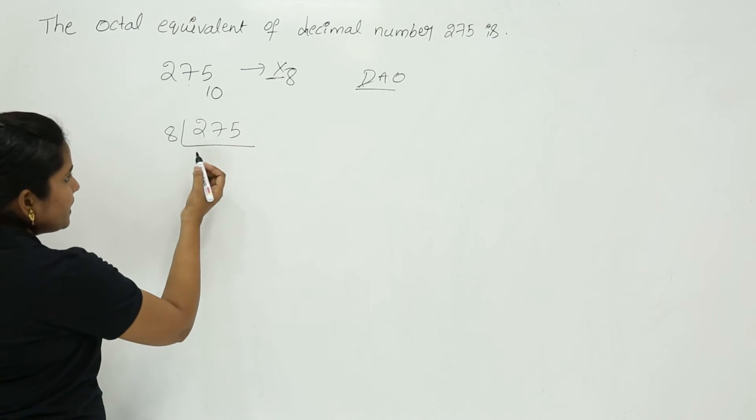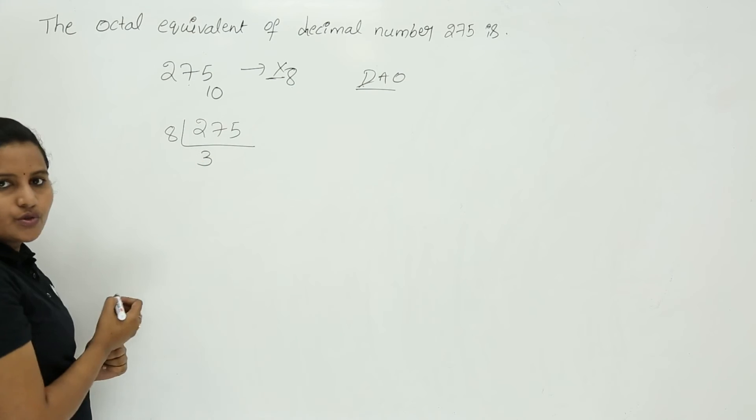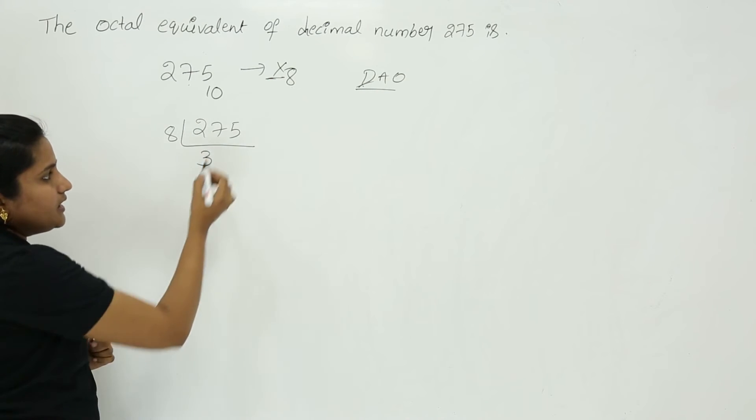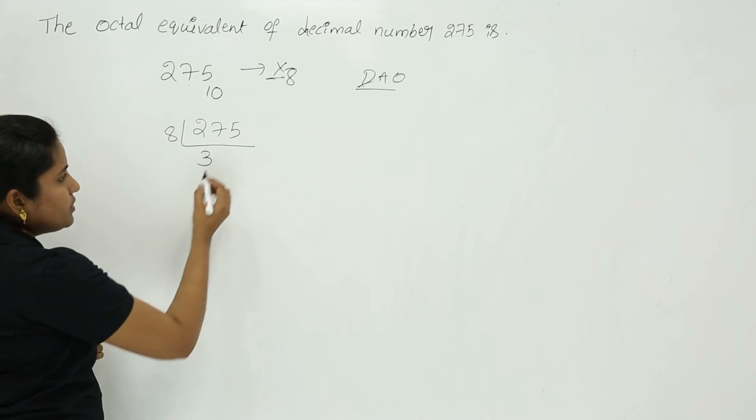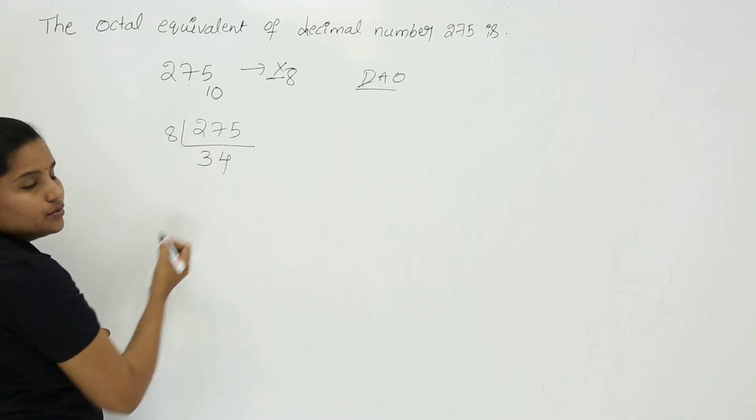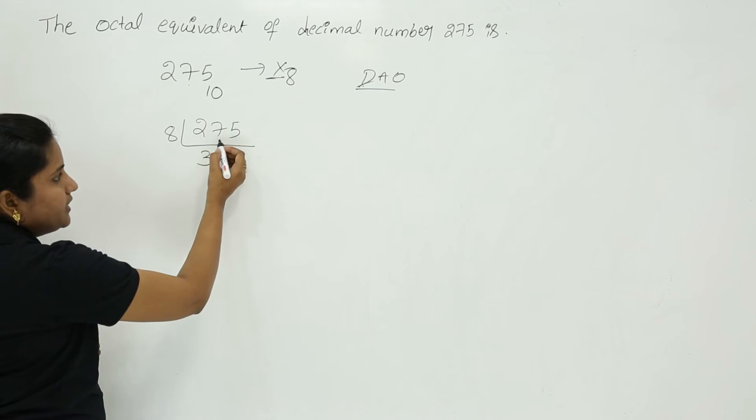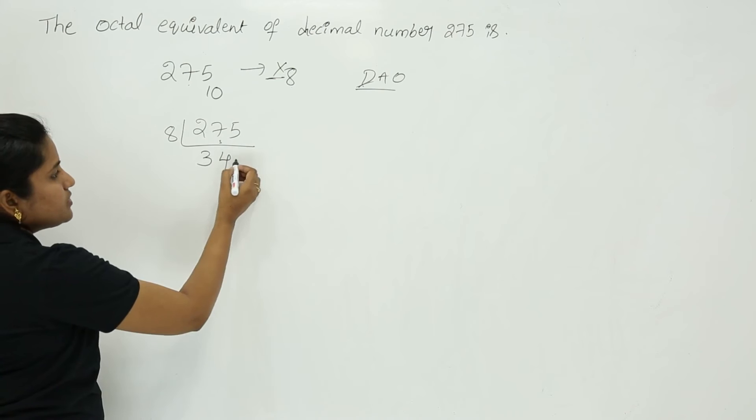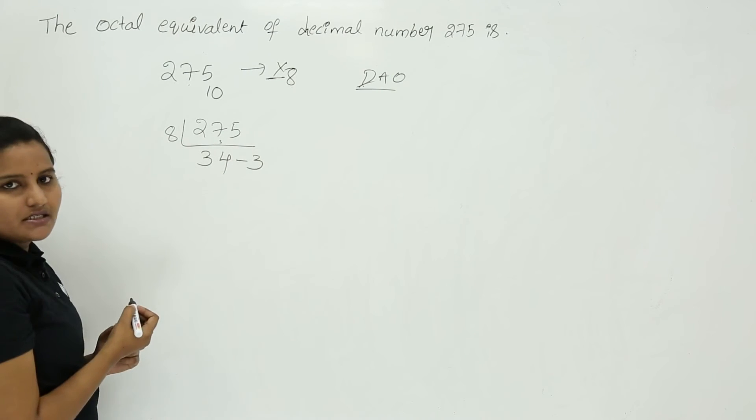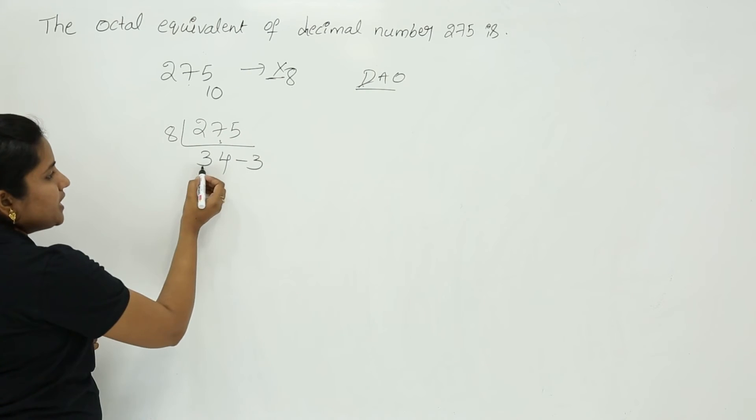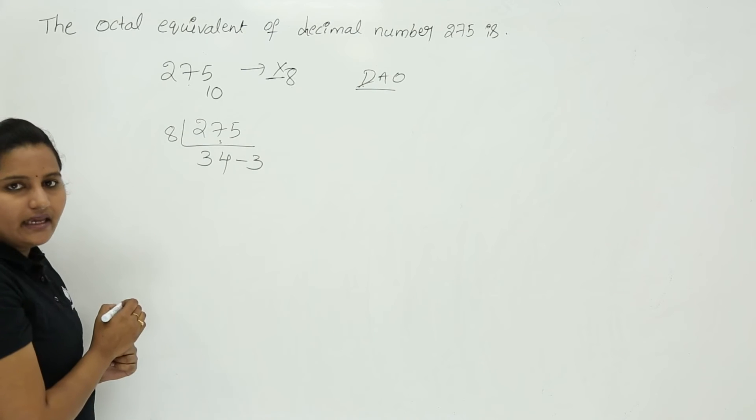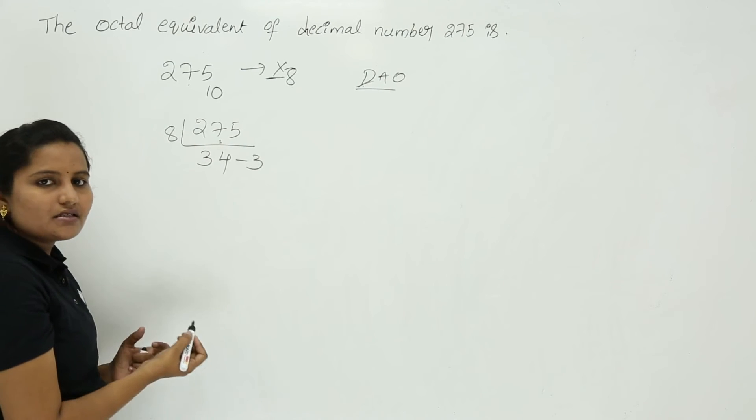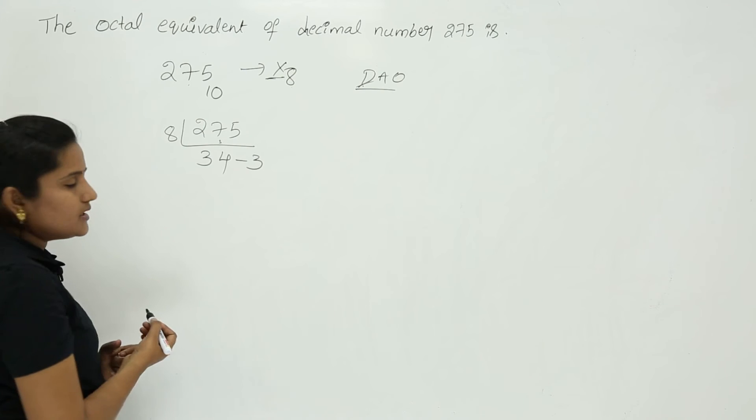So here, 8 times 3 is 24. So remaining is 35. So 8 times 4 is 32. After taking 32 from 35, the remainder is 3 here. Now 34 is greater than 8, you need to take another successive division to get the accurate result.